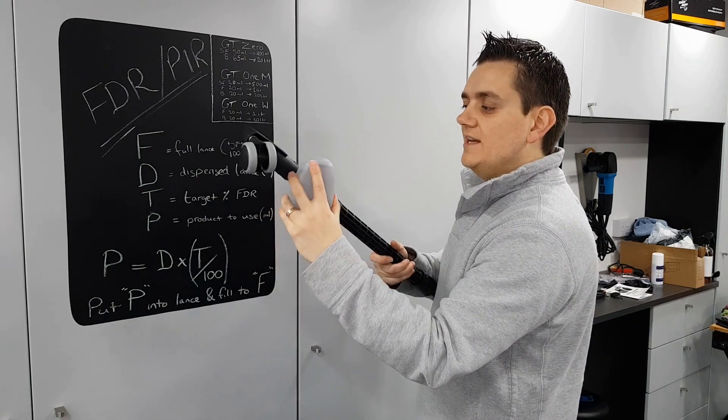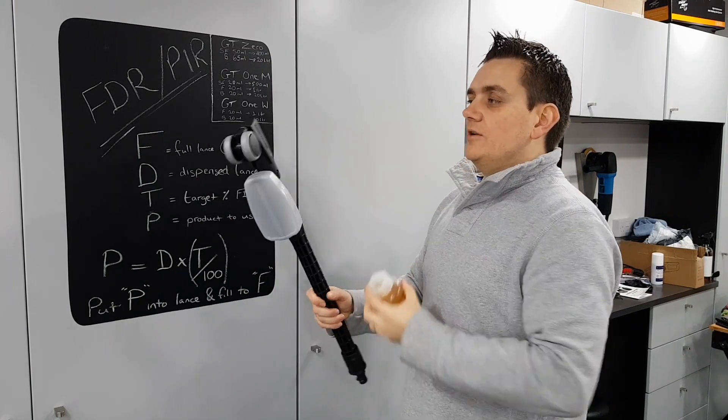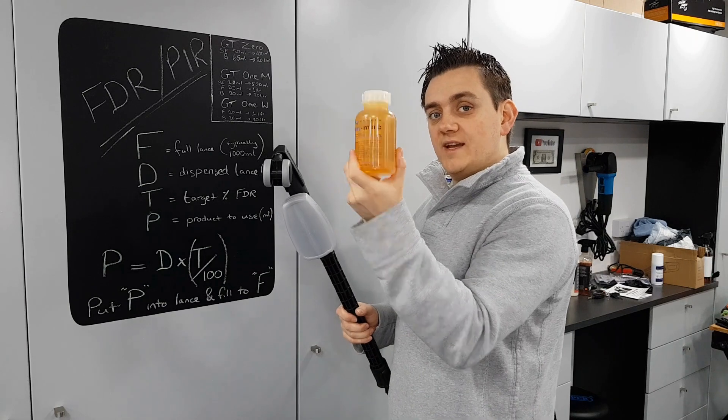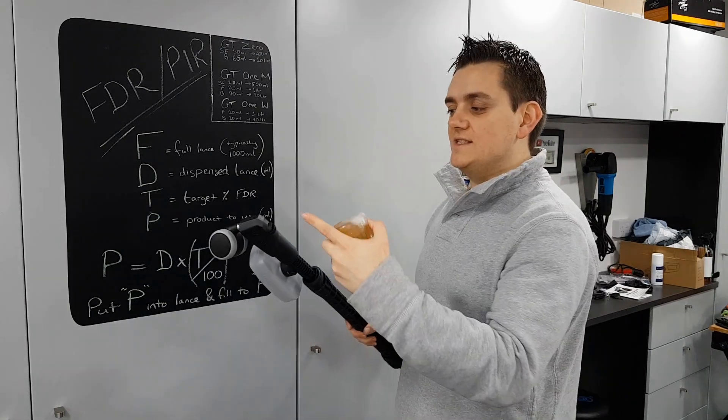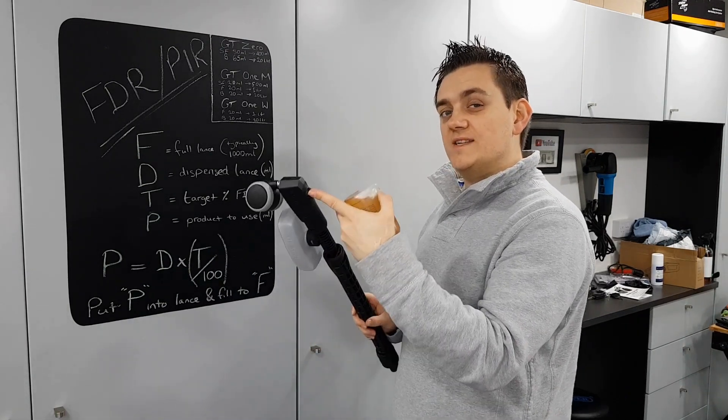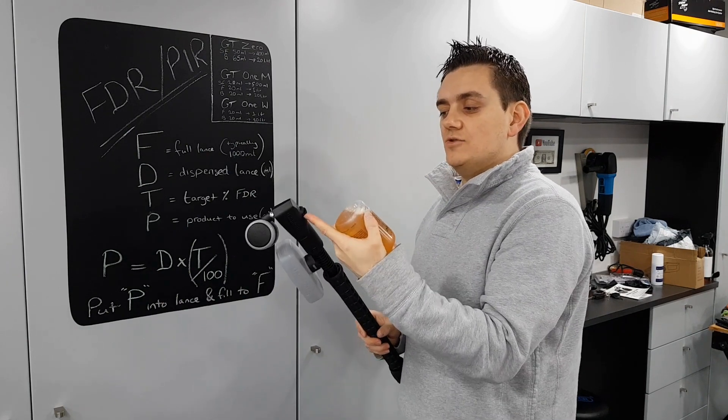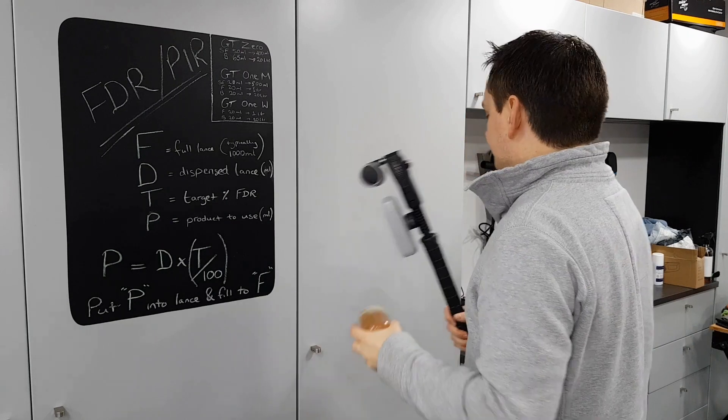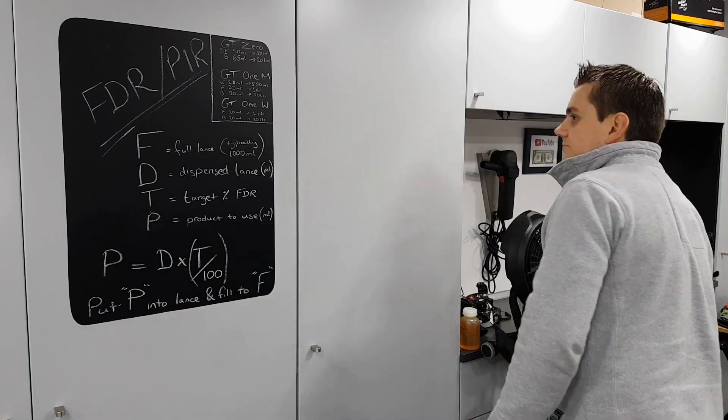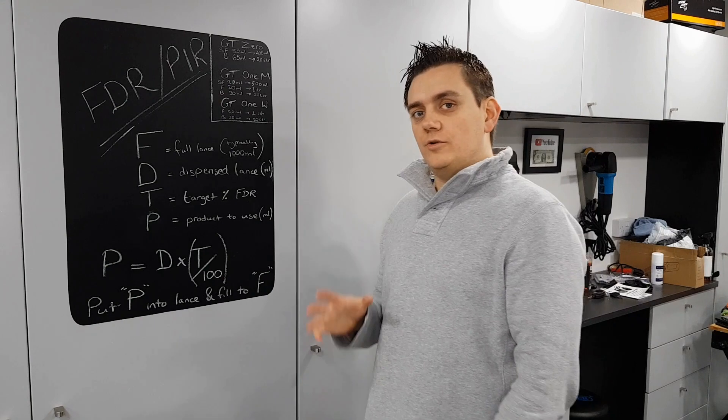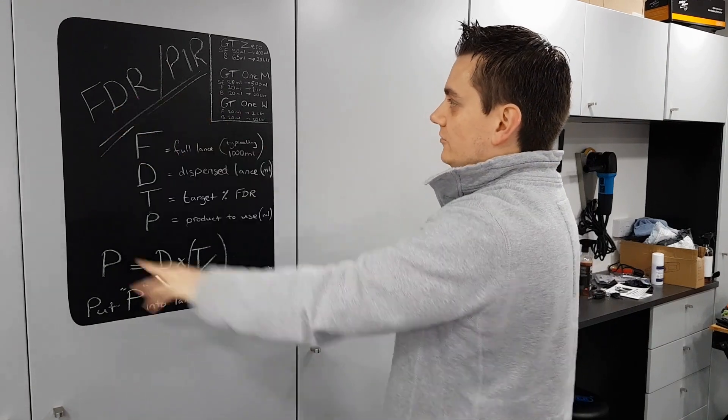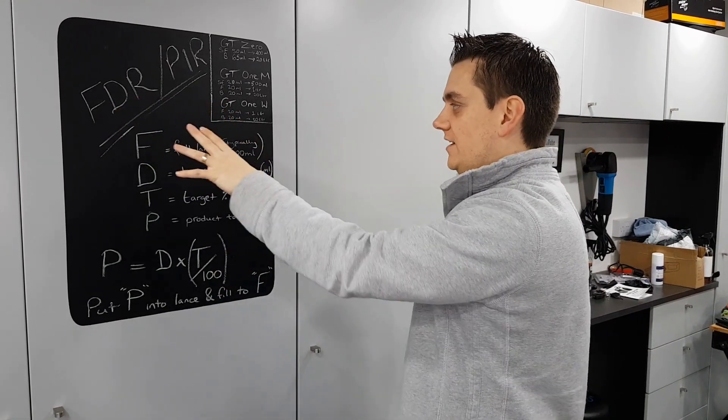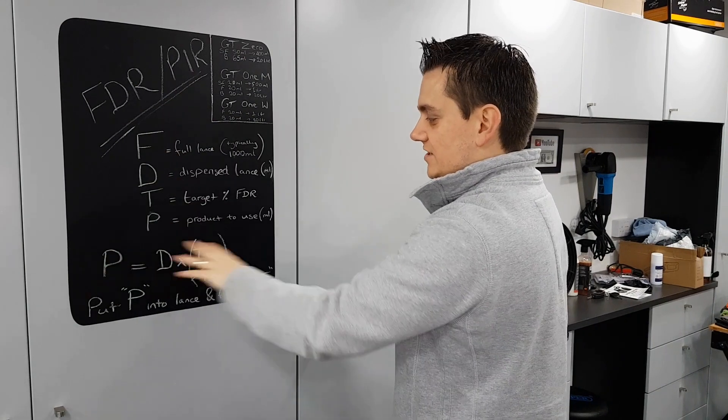You can also get this attachment now. This is for dispensing product using the undercarriage cleaner. So what I'm going to do is work out how much of this I need to put in this to get between three and five percent out of the end. Now I'm going to choose the lower end.